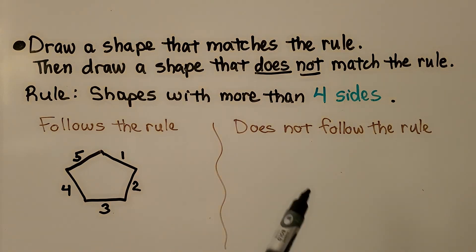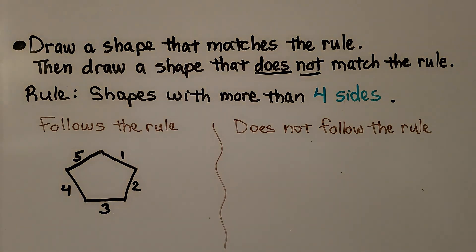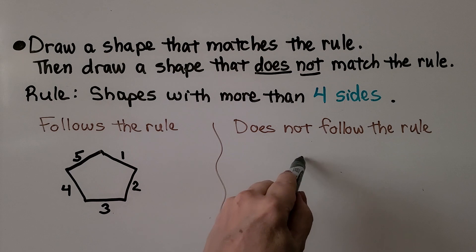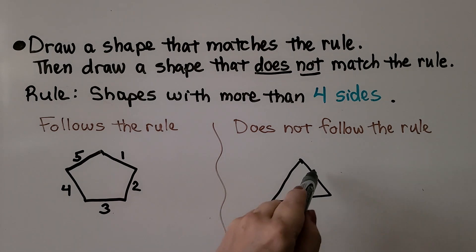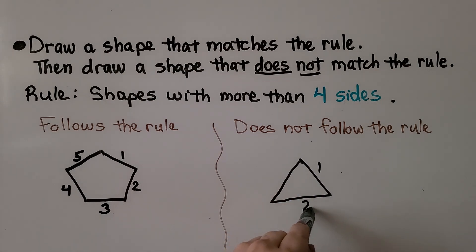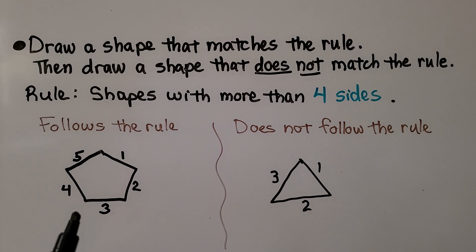Now we need to draw a shape that does not follow the rule — shapes with more than four sides — so we need a shape that does not have more than four sides. We could draw a triangle. That doesn't have more than four sides — it's only got one, two, three sides — and we know that means it's got three angles too. So we drew a shape that followed the rule and a shape that did not follow the rule.